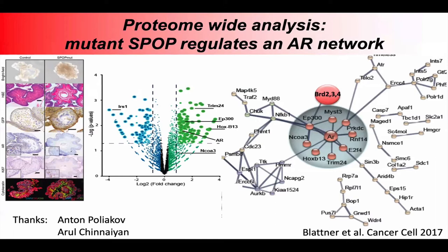These substrates include the androgen receptor itself, but also many coactivators and cooperating transcription factors — like BET bromodomain proteins BRD2, 3, and 4; steroid receptor coactivator 3; the histone acetyltransferase P300; the oncogenic coactivator TRIM24; and the cooperating transcription factor HOXB13. This suggests that SPOP mutations will change AR signaling — not simply by up-regulating androgen receptor signaling, but by changing the coactivator context around the androgen receptor in these tumors.